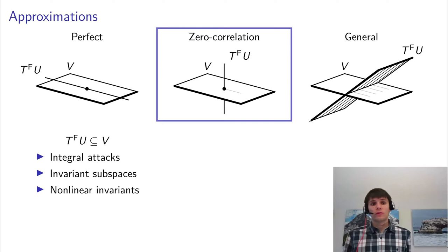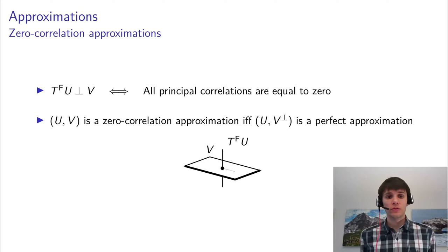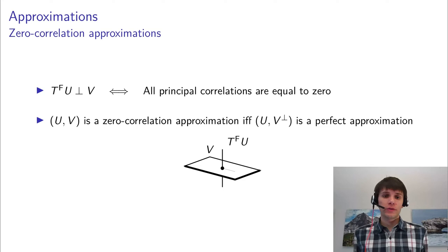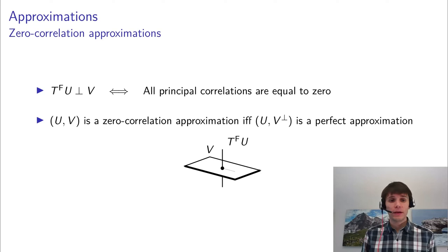Those are perfect approximations. Now I want to discuss the opposite case, which is zero-correlation approximations. What we have here is a situation where T_f(U) is perpendicular to the output space V. Equivalently in terms of principal correlations, all of them are zero. This is, for example, zero-correlation linear cryptanalysis. I just want to mention one interesting result about this: namely, if (U, V) is a zero-correlation approximation,